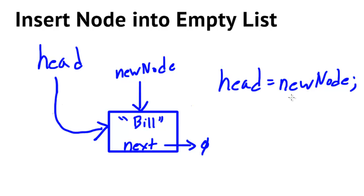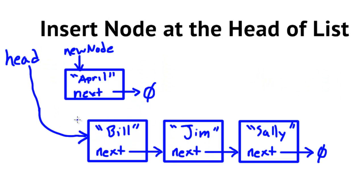In the second case, we're trying to insert the node at the head of the list. But before we can insert it at the head, we have to determine through a traversal that it actually belongs there. In both the second and third cases, we'll do a traversal first to find out where the node belongs.